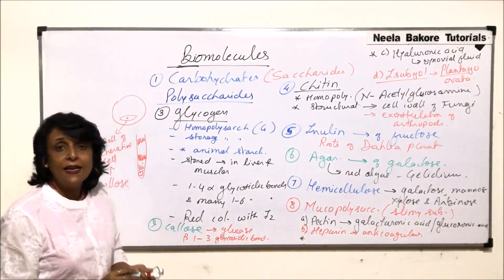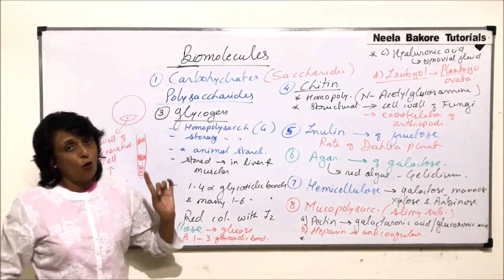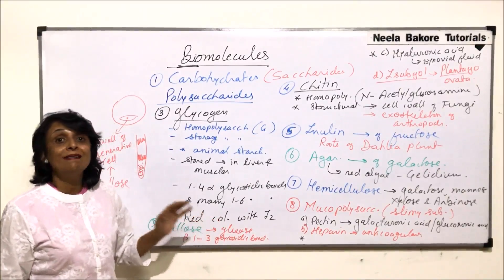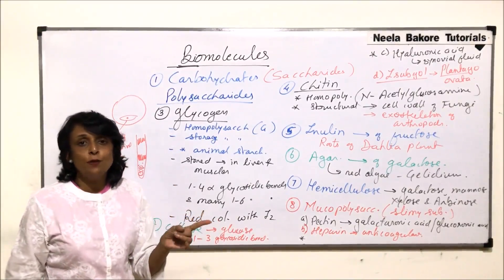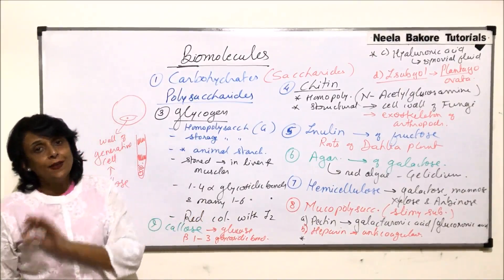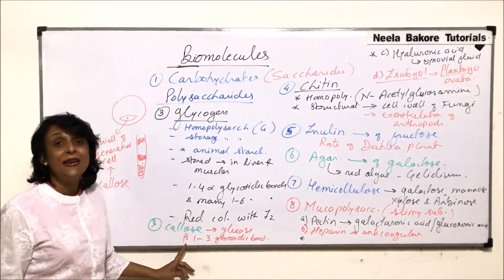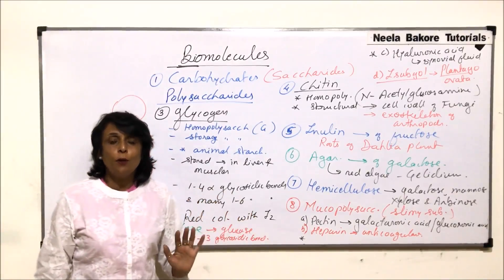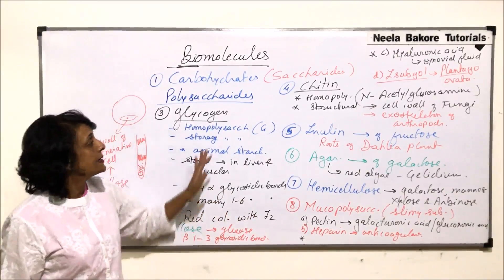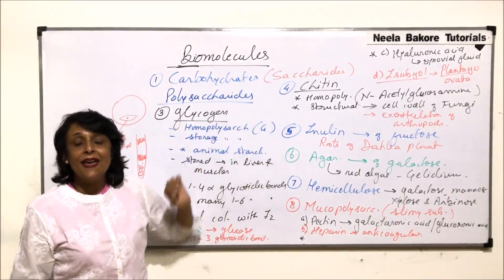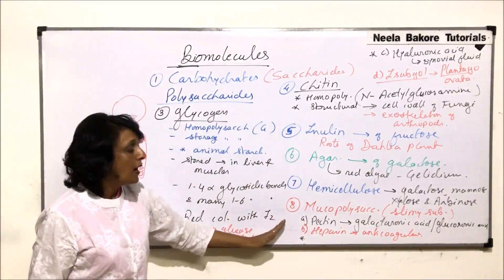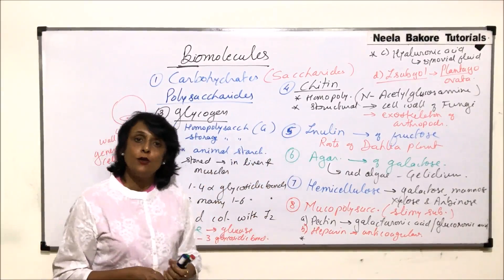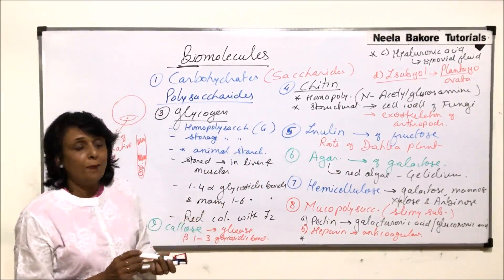Callose is a homopolysaccharide of glucose with beta-1,3 bonds — that is, between the first carbon of one glucose and the third carbon of another. Because the bonds are beta bonds, digestion by alpha amylases is not possible. These are the various kinds of polysaccharides, some homopolysaccharides and some heteropolysaccharides.